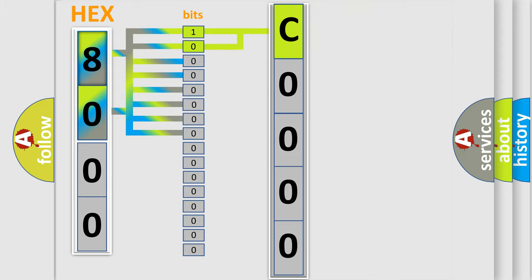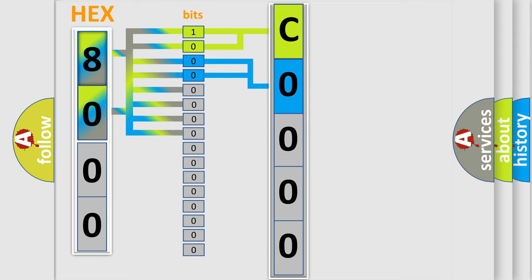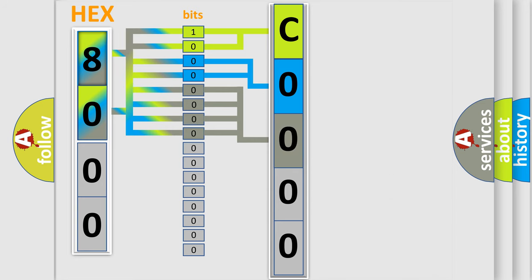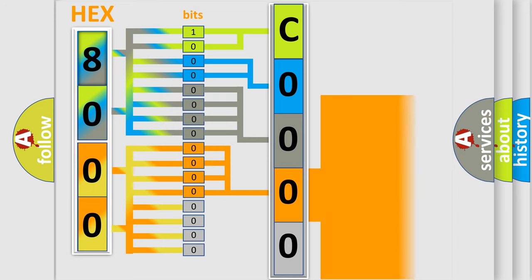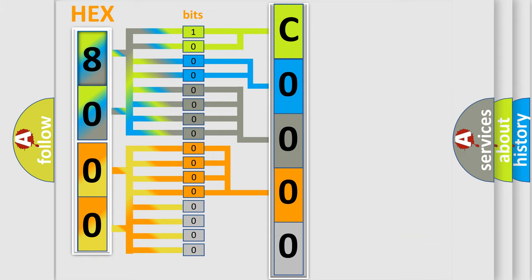The next two bits determine the second character. The last four bits of the first byte define the third character of the code. The second byte is composed of a combination of eight bits: the first four bits determine the fourth character, and the combination of the last four bits defines the fifth character. A single byte conceals 256 possible combinations.